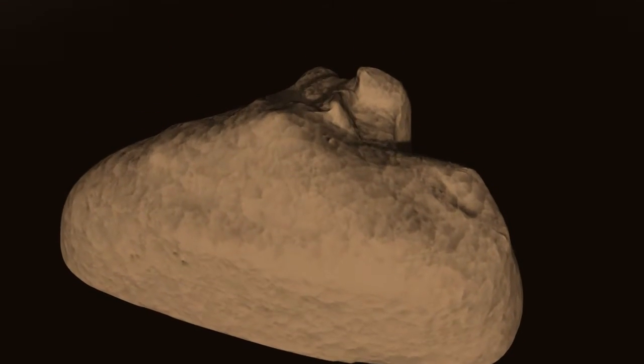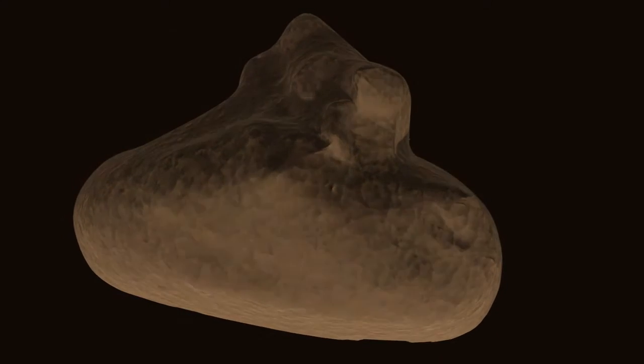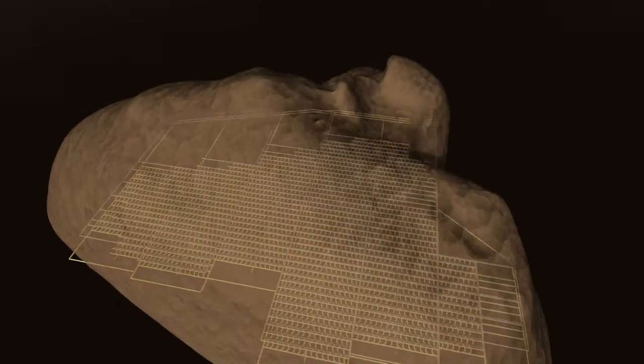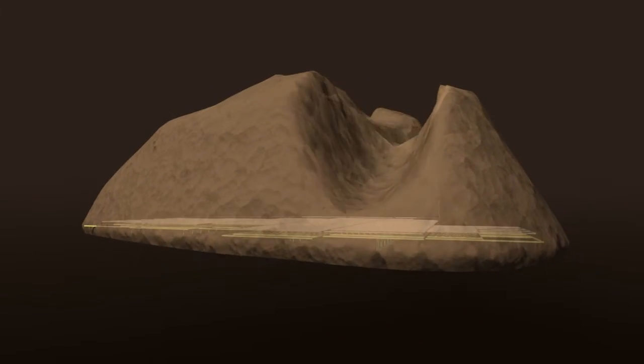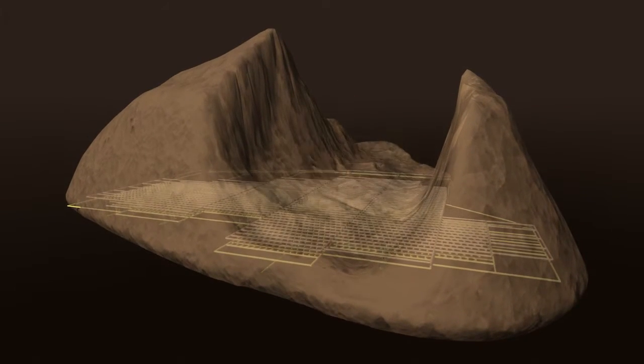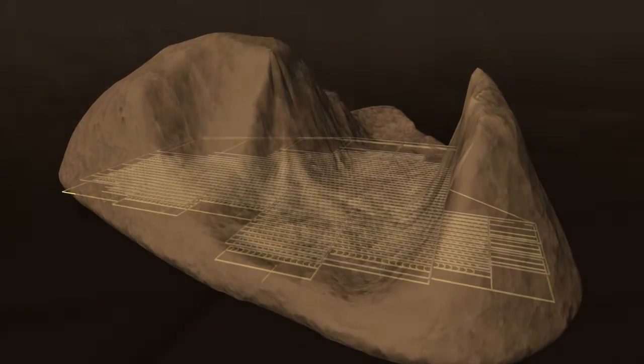Panel caving allows for the mining of very large ore bodies by dividing it into smaller strips or panels, so that the ore can be removed in a safer and more efficient manner. Once a panel is depleted, the next adjacent panel is mined. This cycle continues until all the ore is mined.